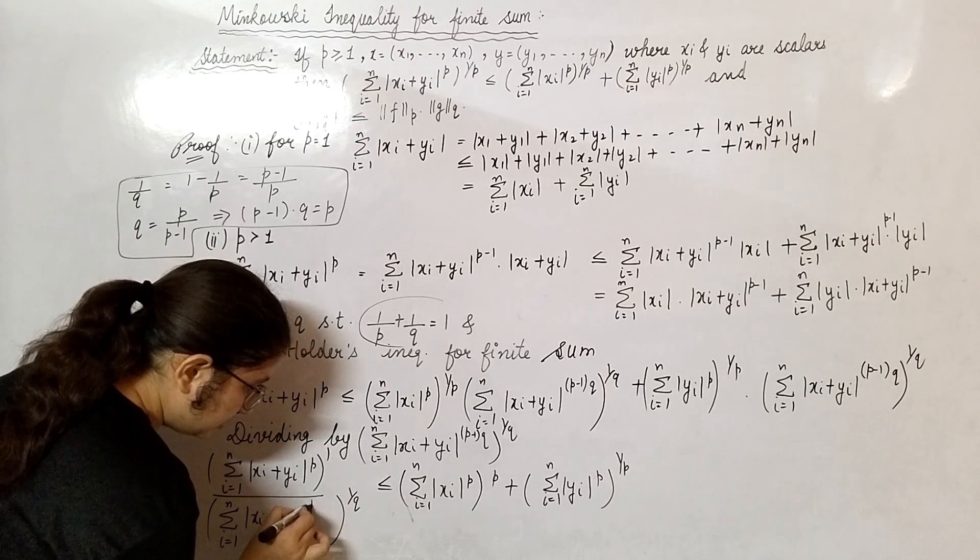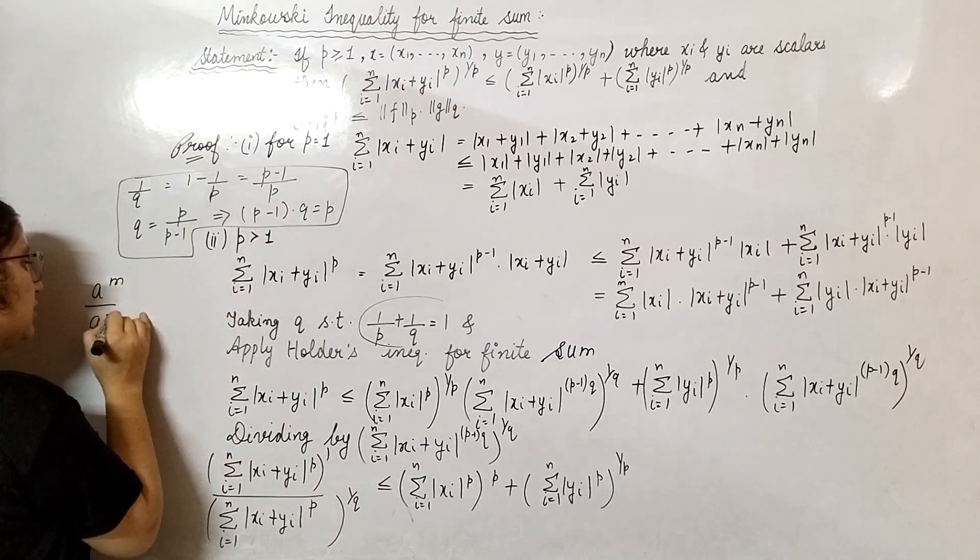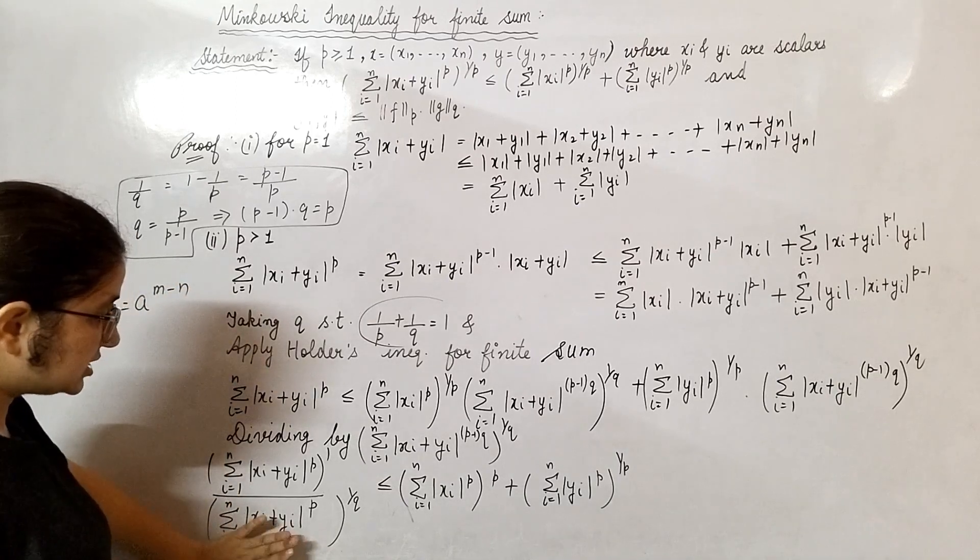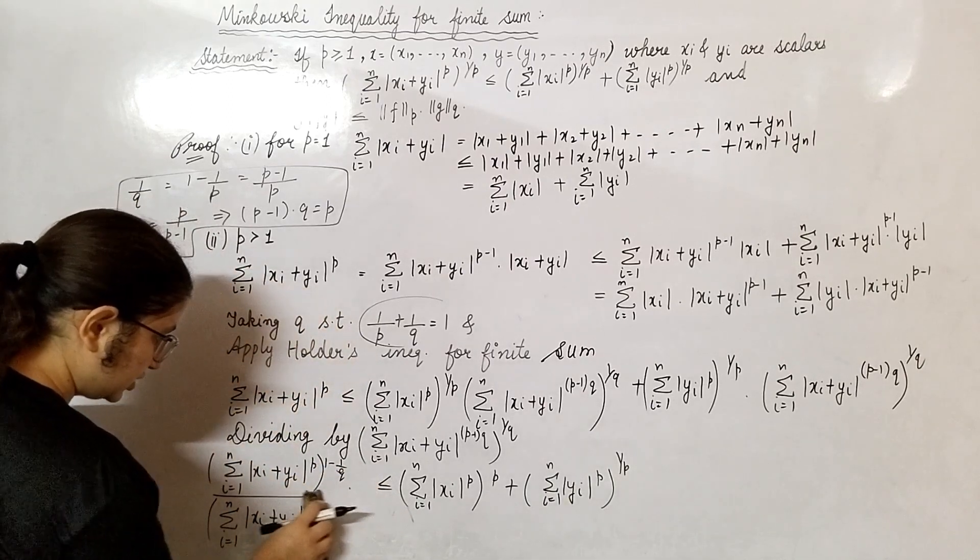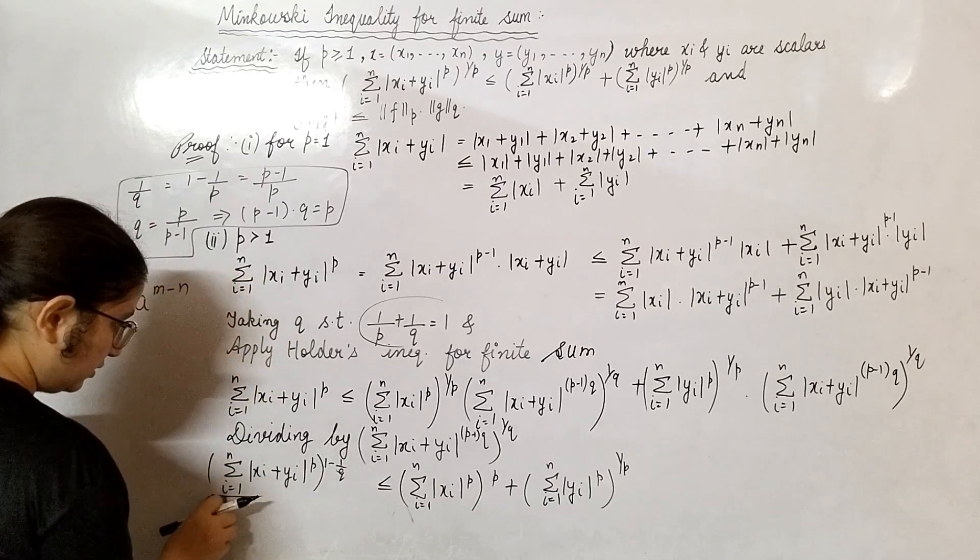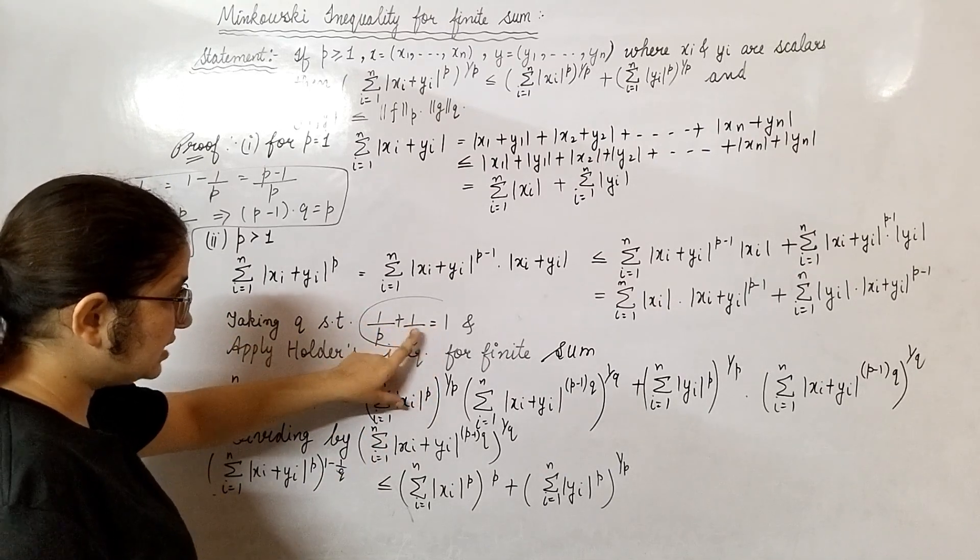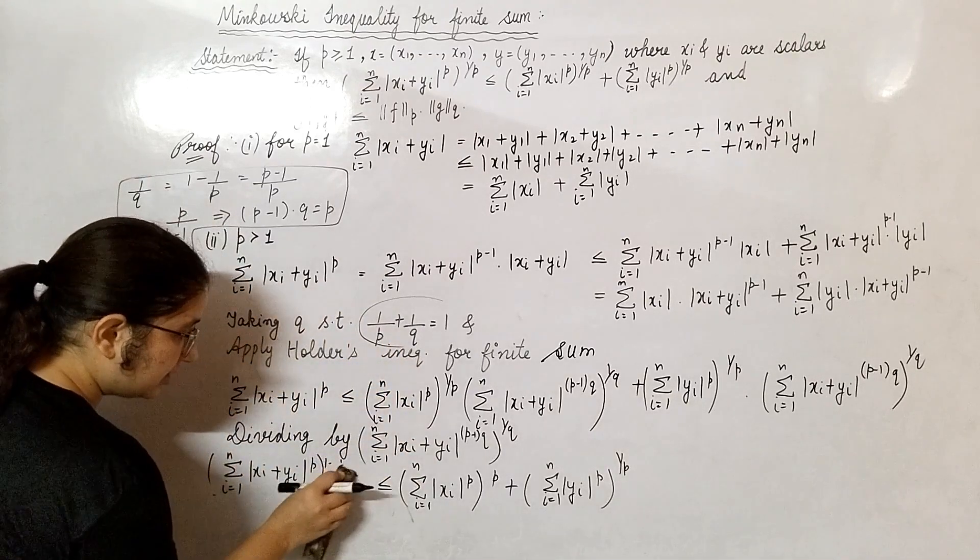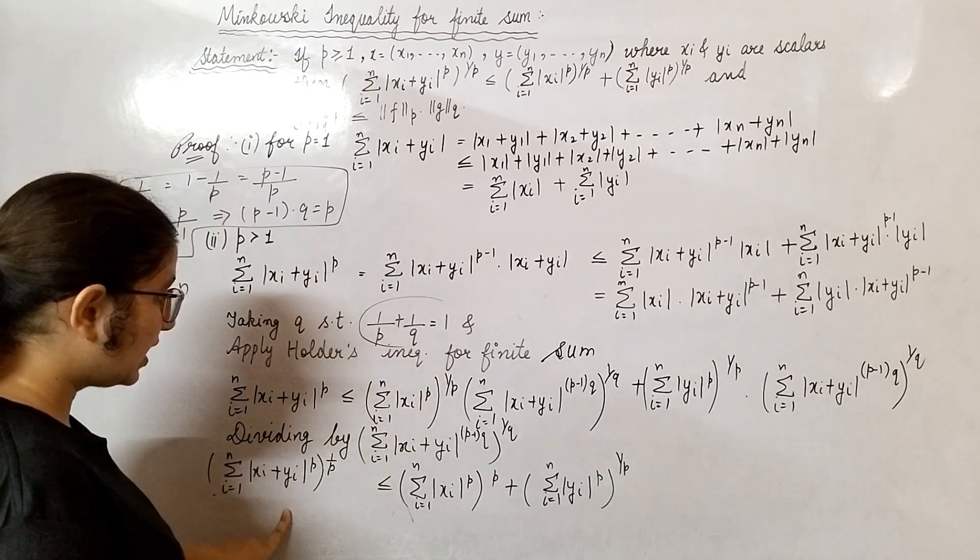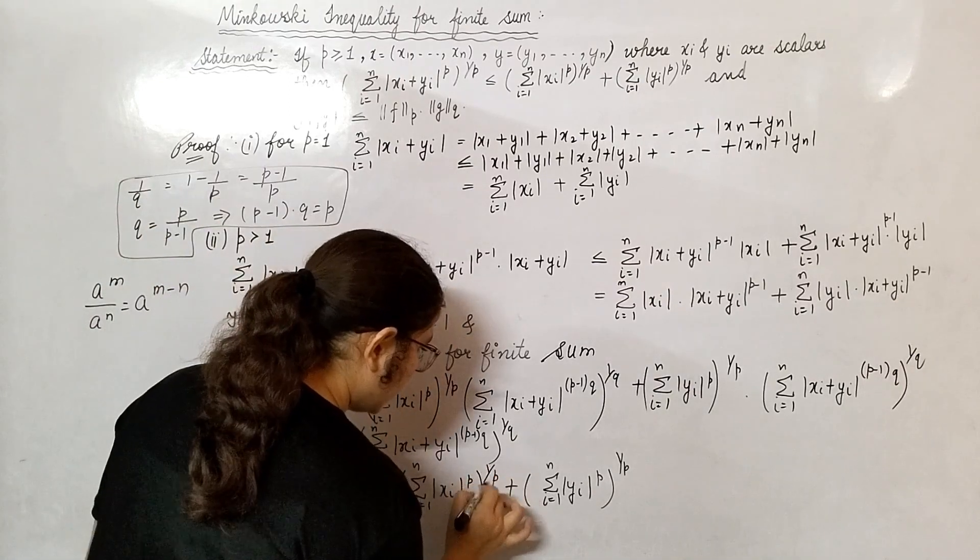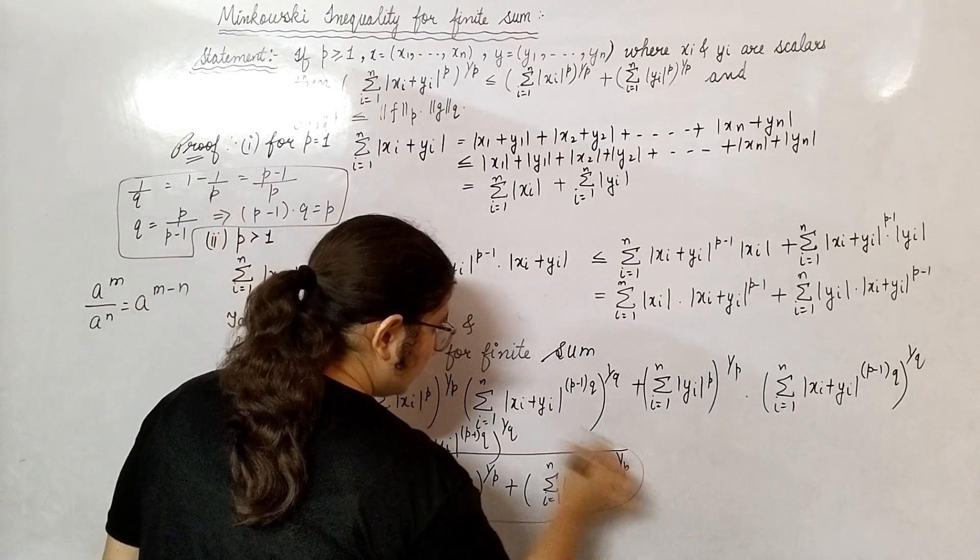Now from here I can write (p-1)·q as p. Look very carefully, this is p. Now your base is same. If you have this form, then what you get? Your base is same, so my 1/q taken up will be subtracted from 1. Now look at this: 1/p + 1/q equals to 1, so 1 minus 1/q equals 1/p. So I can write here 1/p. Look, this is your required relation. This is our required relation. Done, very easy.